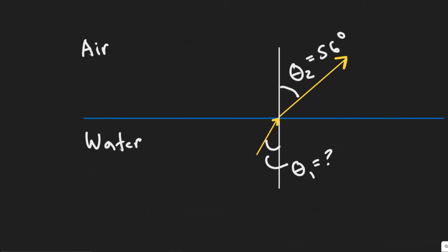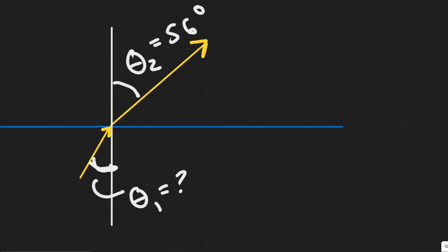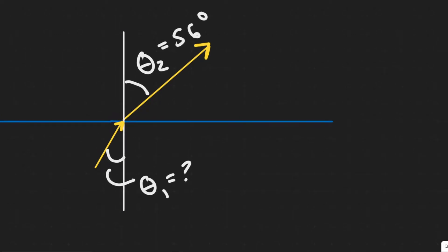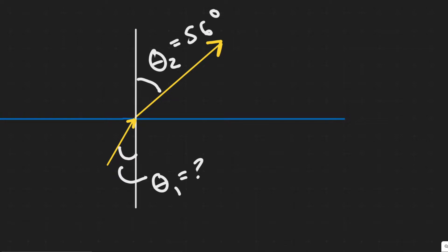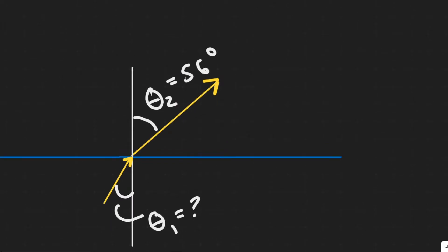We're going to label n1 and n2. There are two angles: this angle is what we call the angle of incidence, and this angle is what we call the angle of refraction. We're solving for the angle of incidence, theta1. The angle of incidence is the angle between the beam and the normal line, which is perpendicular to the surface. The angle of refraction is the angle between the exiting beam and the normal line. They tell us the angle of refraction — it exits at 56 degrees, so theta2 equals 56 degrees.